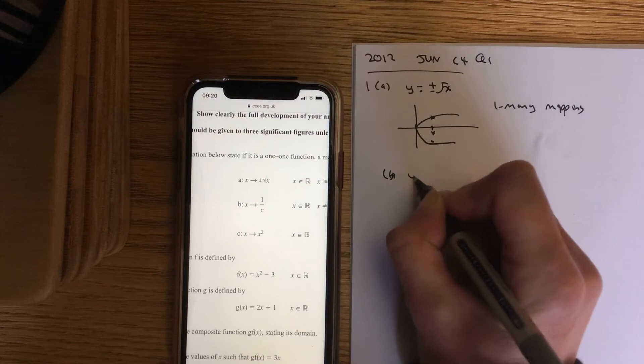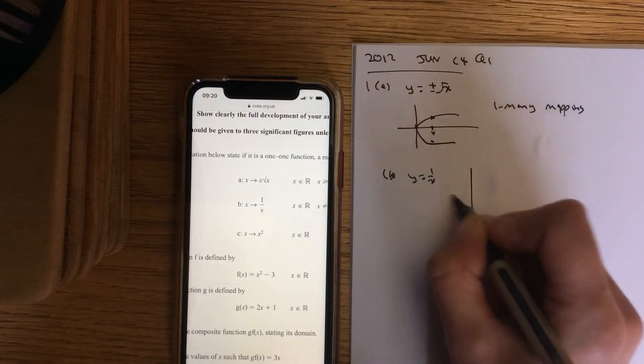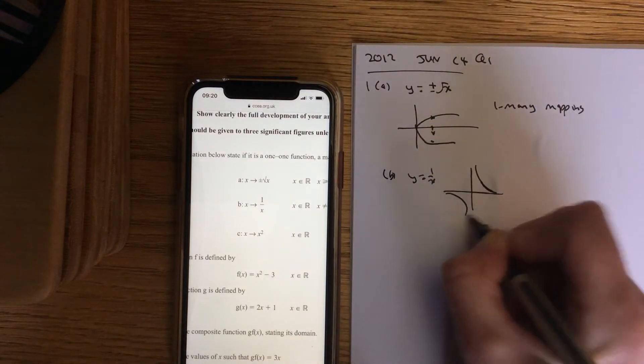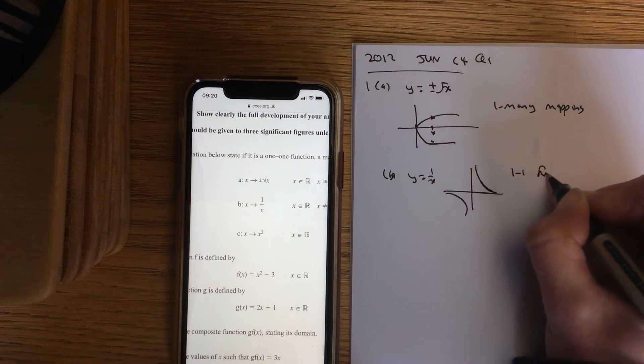Part B, y equals 1 over x. So what's this here graph? That's a 1 to 1 and it's a function.